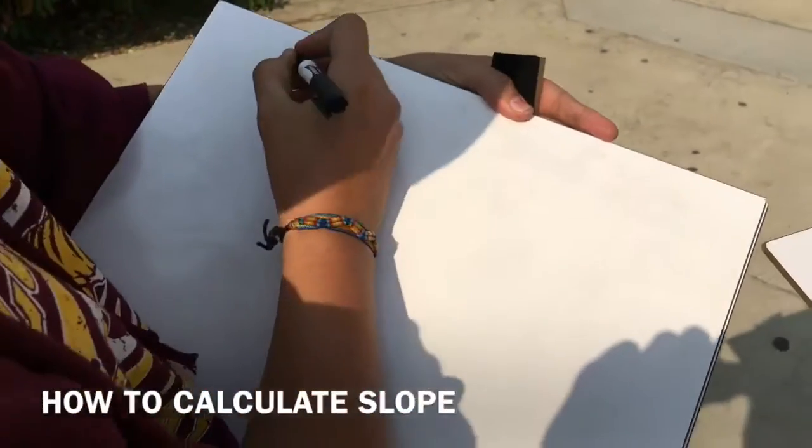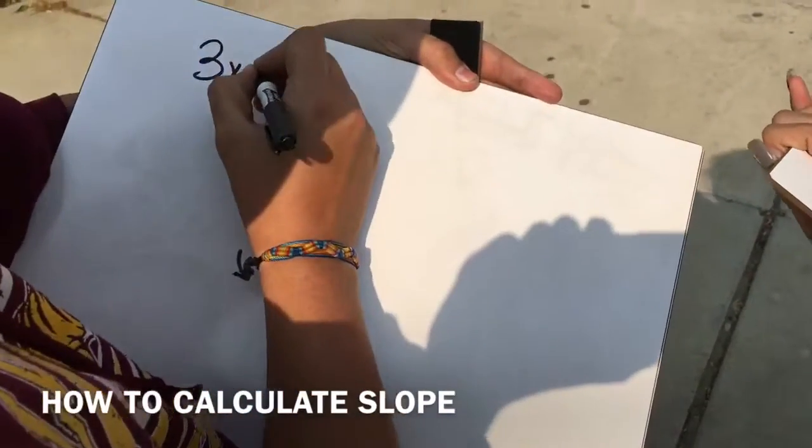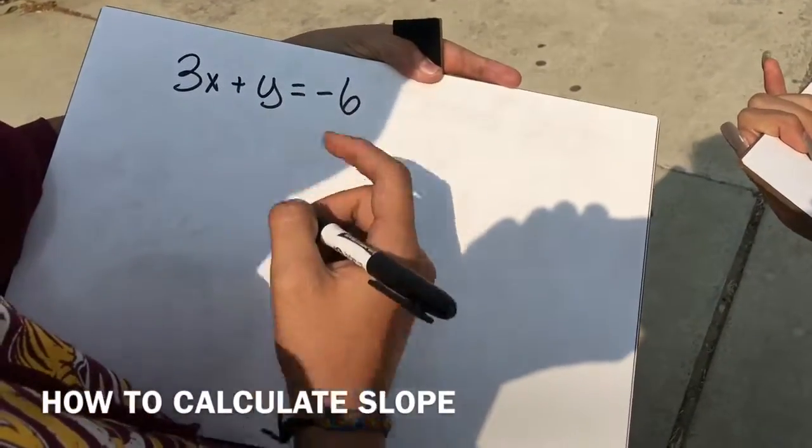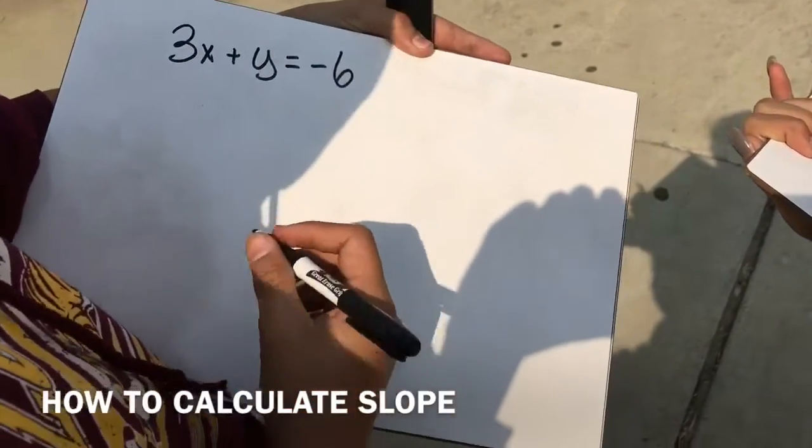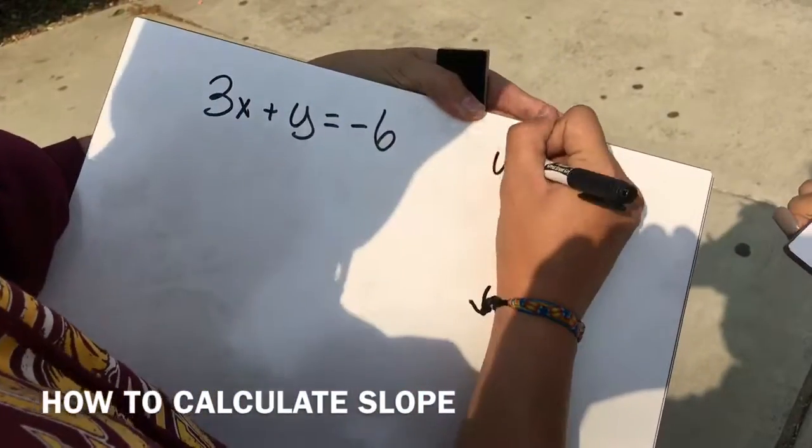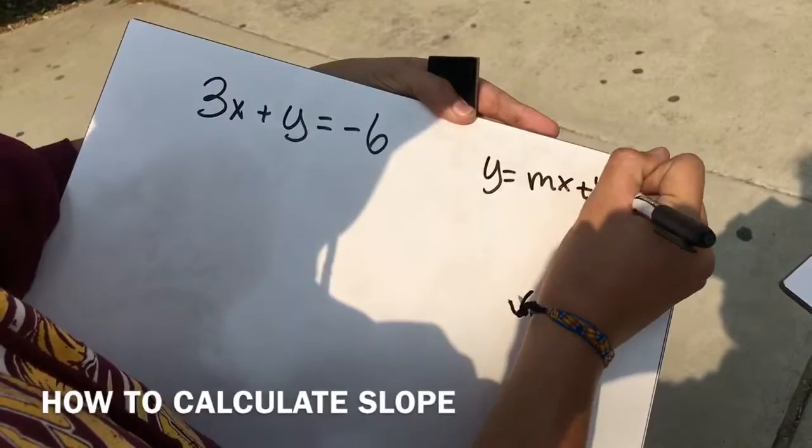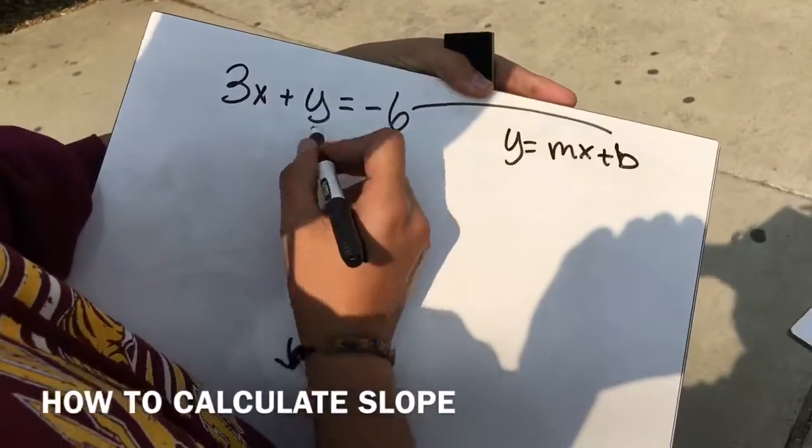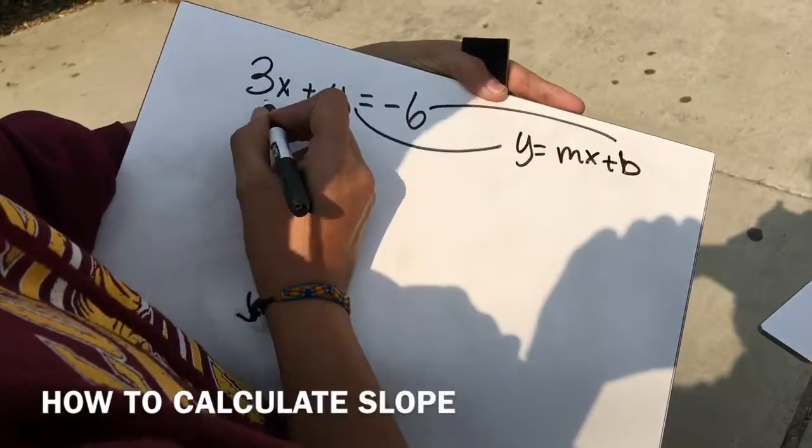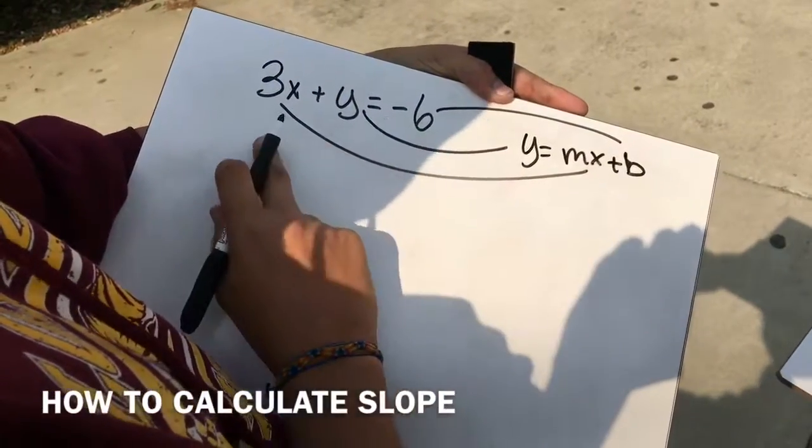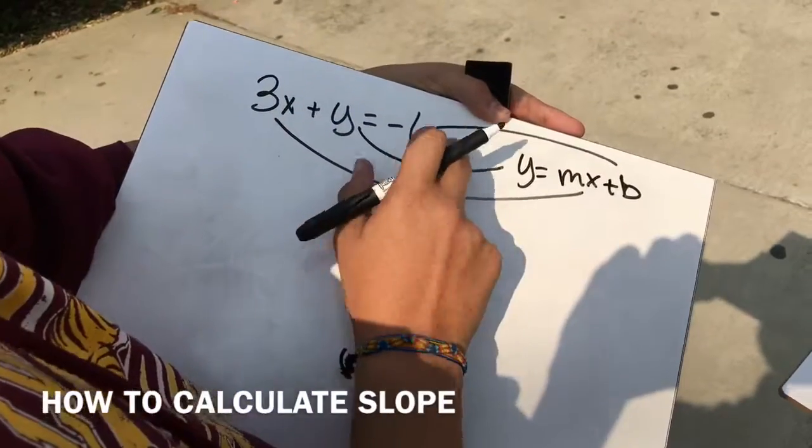Okay, so we're going to start with 3x plus y equals negative 6. Got that? Yes. So what we have to do is get this into this form, y equals mx plus b. So 6 is b, y is y, and 3x is mx. I see. So we need to get this onto this side, correct?